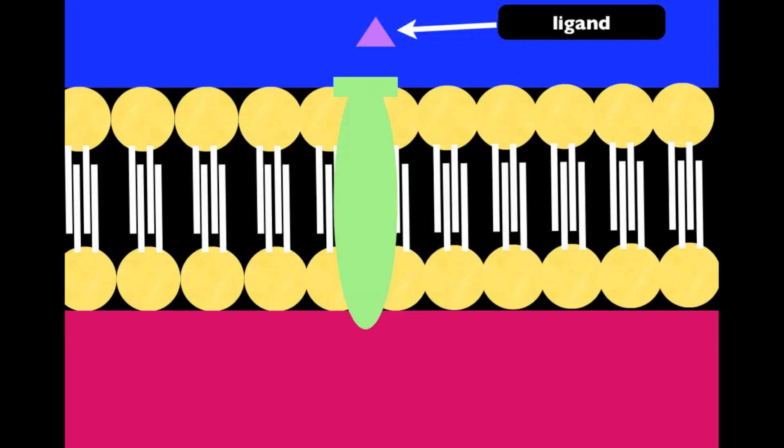In the same way, if the ligand is too big to fit into the cell, it will attach to the protein channel, and instead of going into the cell, it will transport the message down the protein channel so that the cell knows what to do.